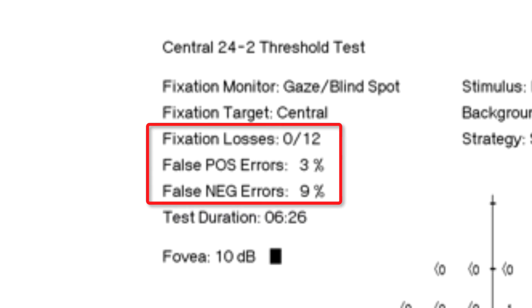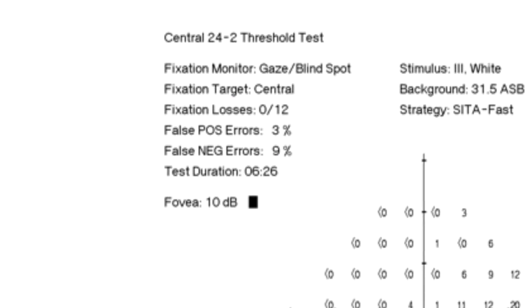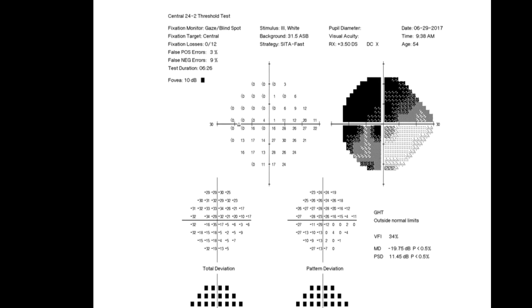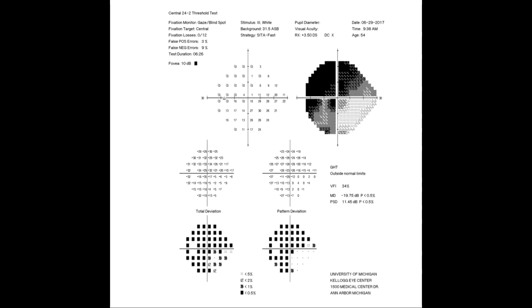Here's the problem with the reliability indices. They are not that reliable. They tell you how consistent the patient was, but they do not tell you if the patient deliberately performed poorly. The patient may have been a good test taker, but he or she could also have done a good job of fooling the instrument. Any pattern of visual field defects can be faked. On the other hand, if the reliability indices are good and you trust the patient, assume the defects are organic.